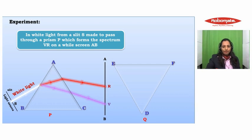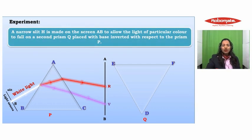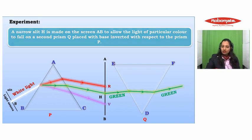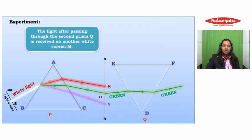A narrow slit is made on the screen AB to allow the light of some particular color to fall on the second prism Q with its base inverted with respect to prism P. Let's say green color is passing through the slit, which is made to fall on prism Q. The light then passes through the second prism Q and is received on another white screen M.